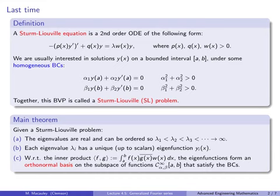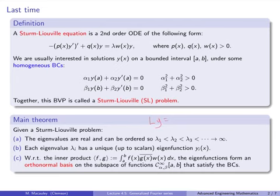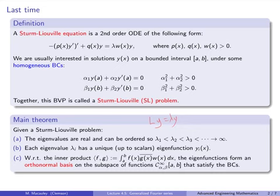This is on the subspace of smooth functions that satisfy the boundary conditions. The reason why this is true is because a Sturm-Liouville problem is just an eigenvalue problem, LY equals lambda Y, and L is a self-adjoint linear operator. Therefore, it has all real eigenvalues and orthogonal eigenvectors. The fact that they can be ordered and go off to infinity is a difficult technical detail beyond the scope of this class.